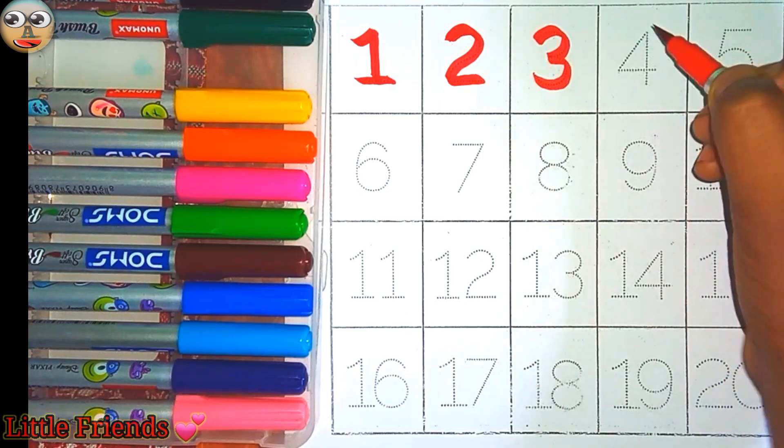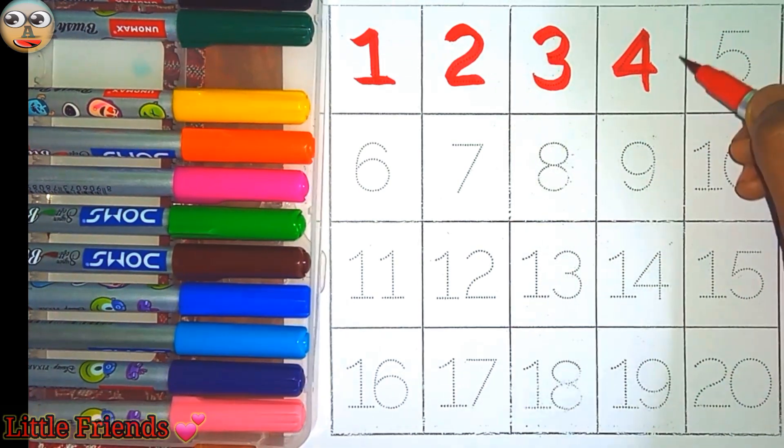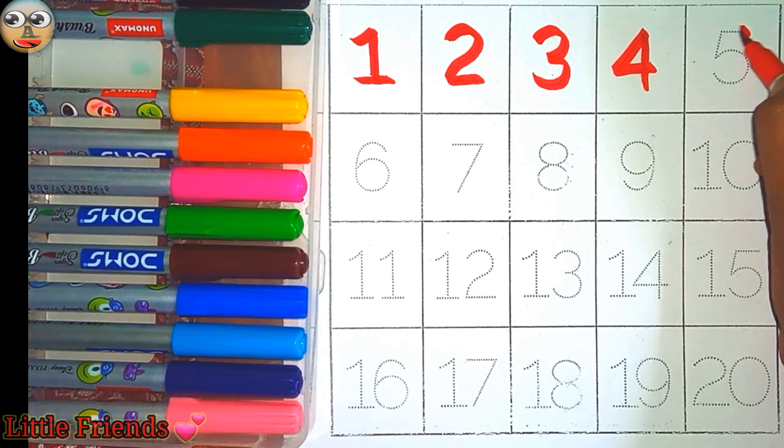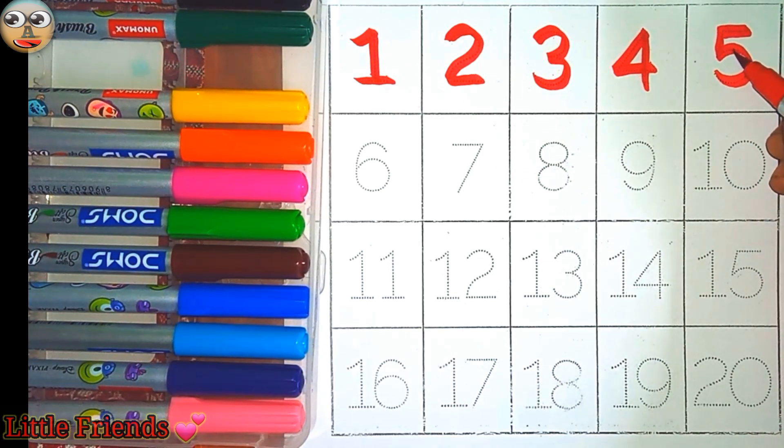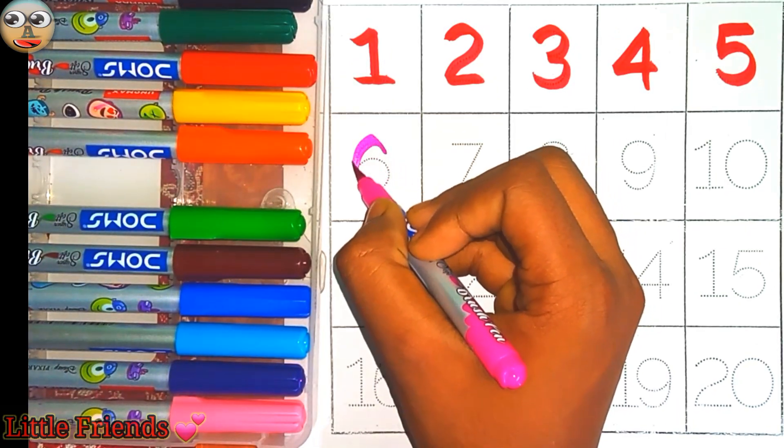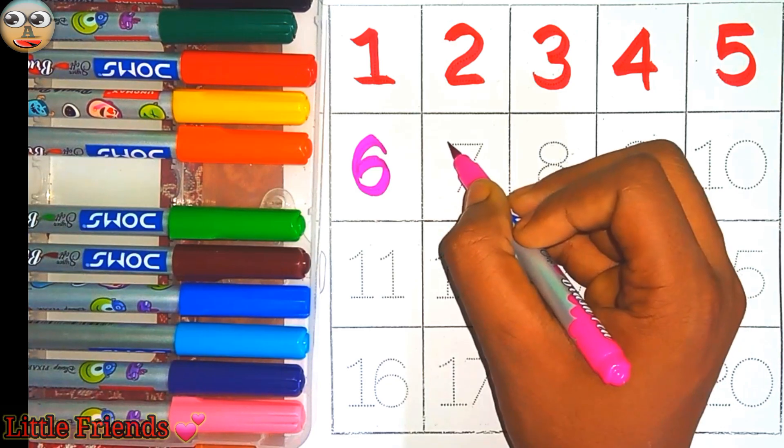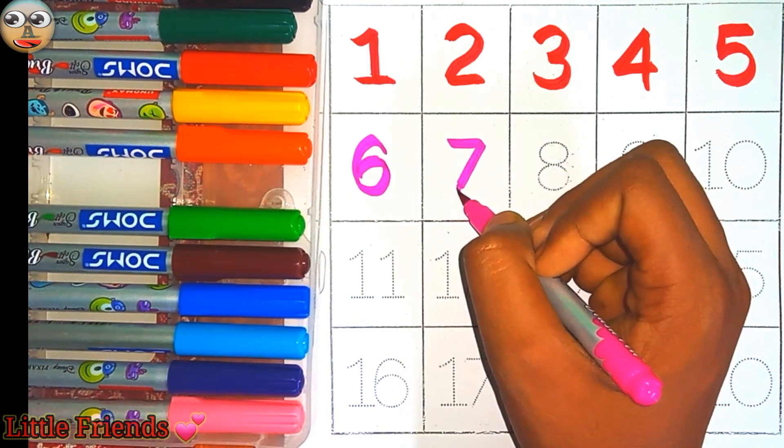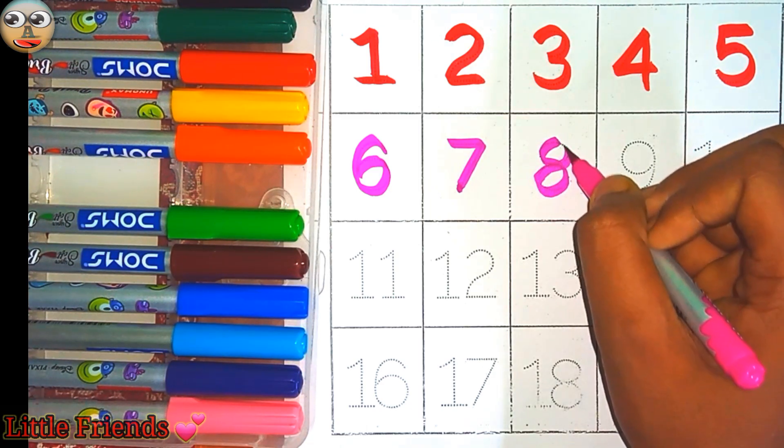Four, this is four. Five, this is five. Six, this is six. Seven, this is seven. Eight, this is eight.